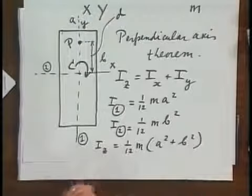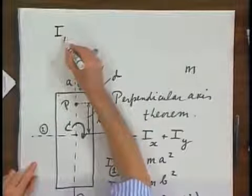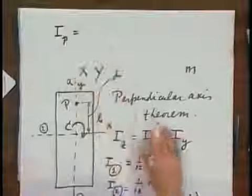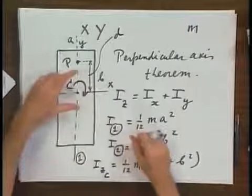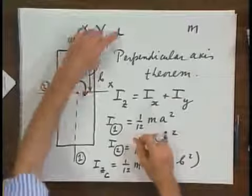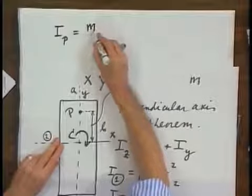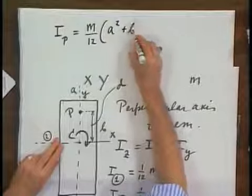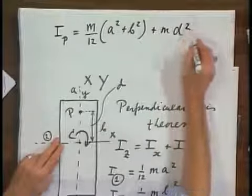And so I know the vertical axis about point C. Therefore, the moment of inertia about point P, vertical axis perpendicular to the paper, is the moment of inertia about point C about this axis plus M times D squared. I will write that M/12 times (A squared plus B squared) plus M D squared.